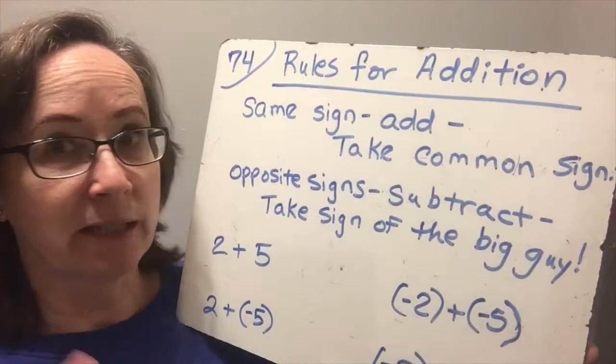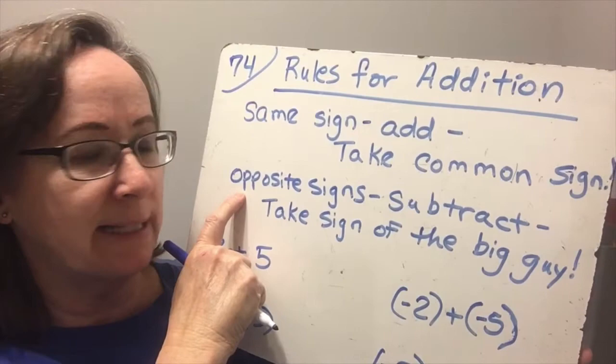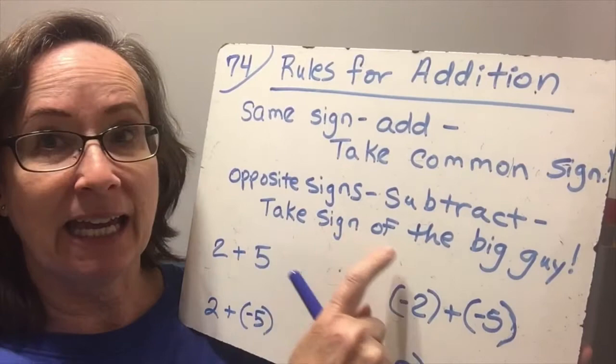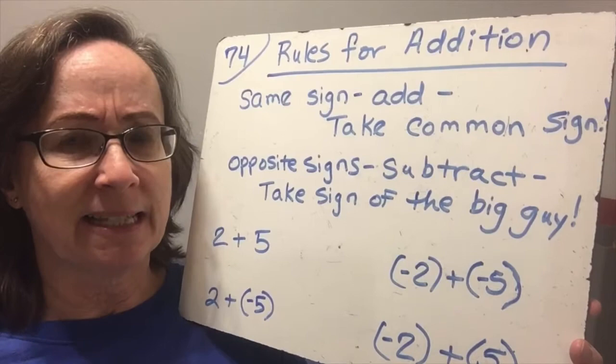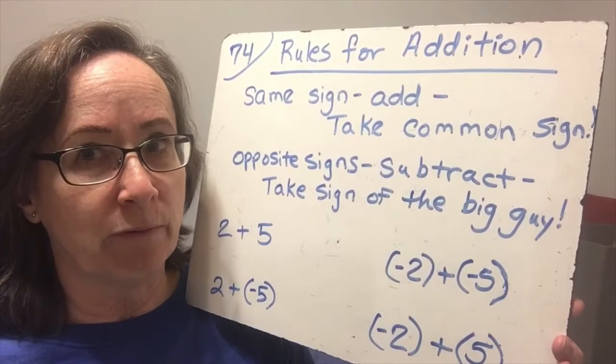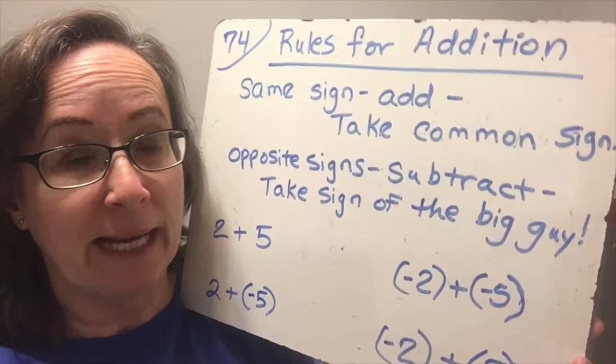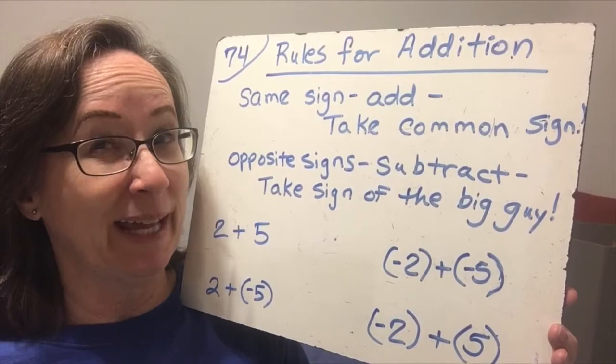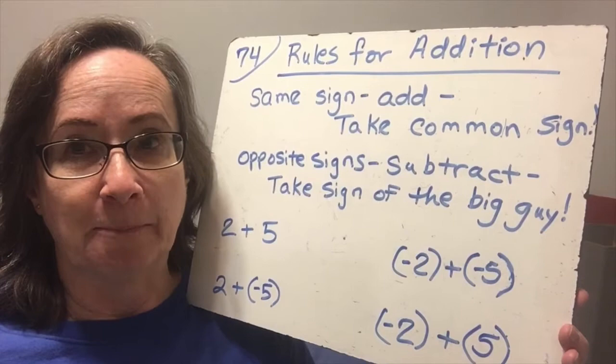If we have opposite signs — if one is negative and one is positive — we will subtract the absolute values and take the sign of the big guy. When we have two opposite-sign numbers adding together, it's like a tug of war: one was pulling to the left, one was pulling to the right, so the one with the bigger absolute value wins the tug of war and determines the sign of the answer.